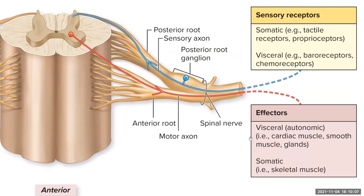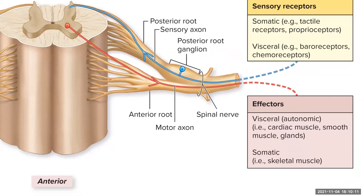When we get to the effectors, there are two types: muscle and glands. There are three types of muscle. We're talking about our effectors: we have visceral, also known as autonomic, and somatic. Somatic are going to be the voluntary effectors, and the only type of voluntary effector you have is skeletal muscle. That means all the other effectors fall under visceral autonomic involuntary control, which includes cardiac and smooth muscle and glands.